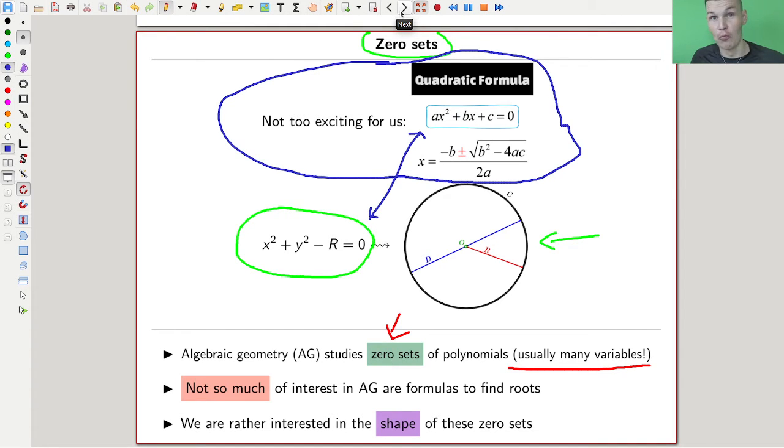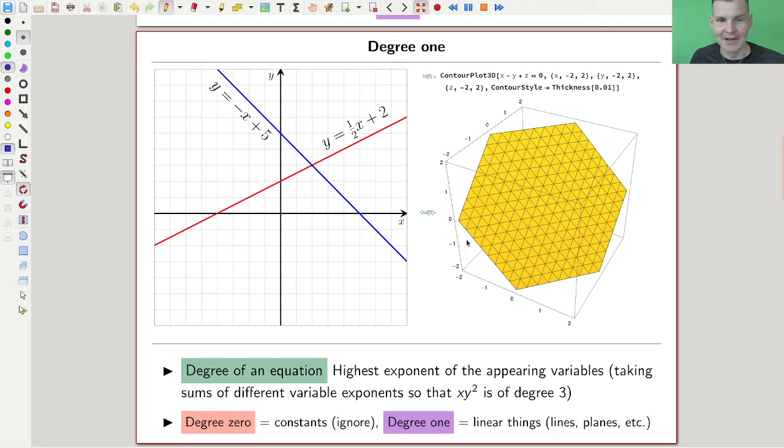For example, degree one. Degree zero is constants; I'll ignore those. The degree of a polynomial is just the highest appearing exponent. Here's one, one, and two, so this would be a degree four expression. Degree one is really linear things.